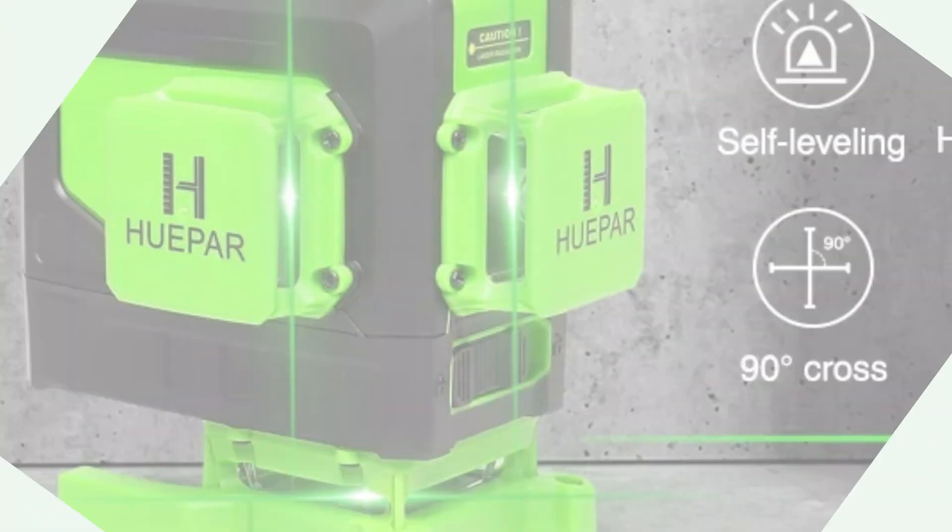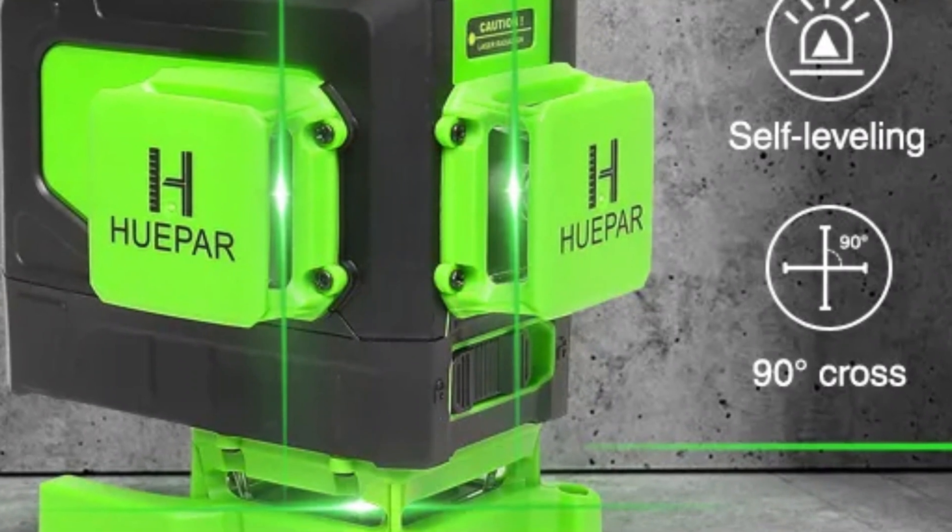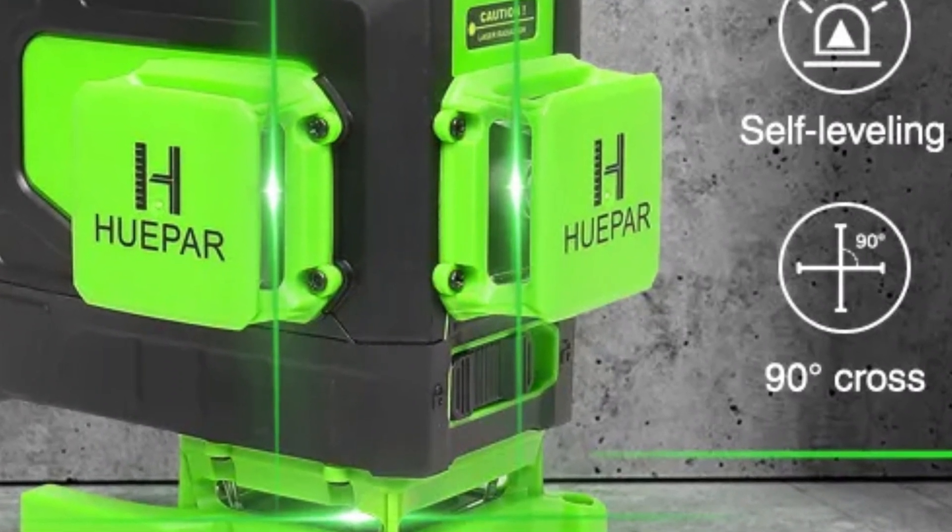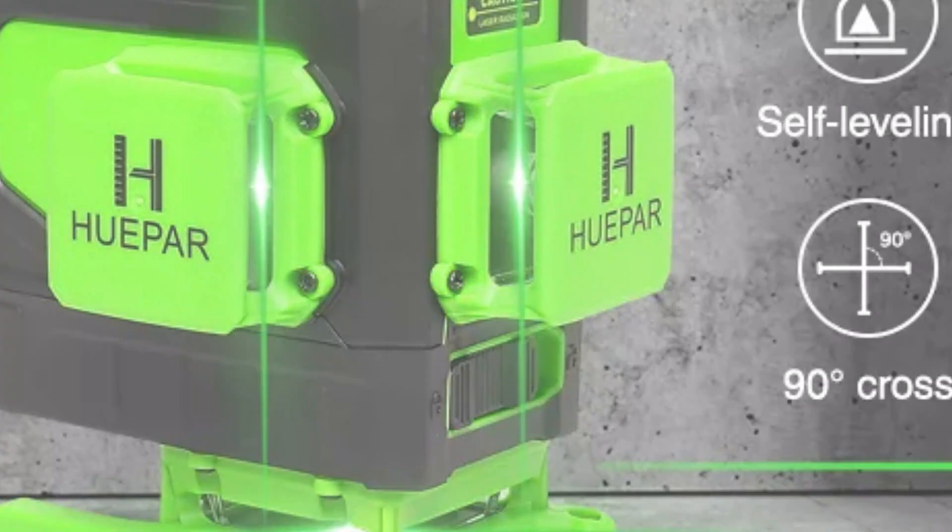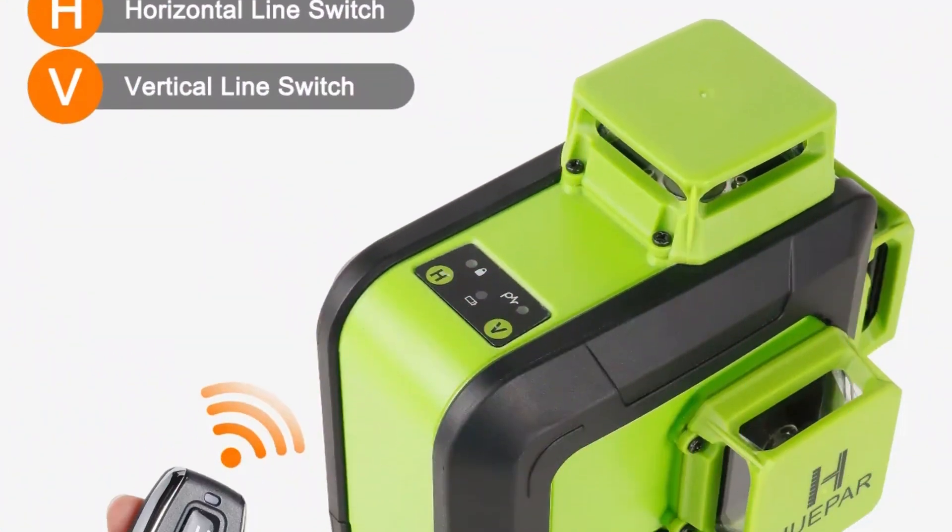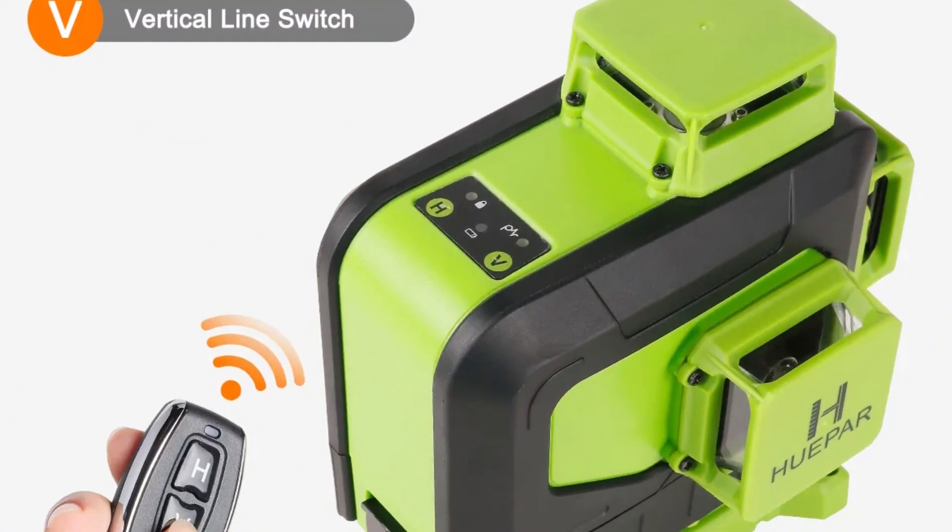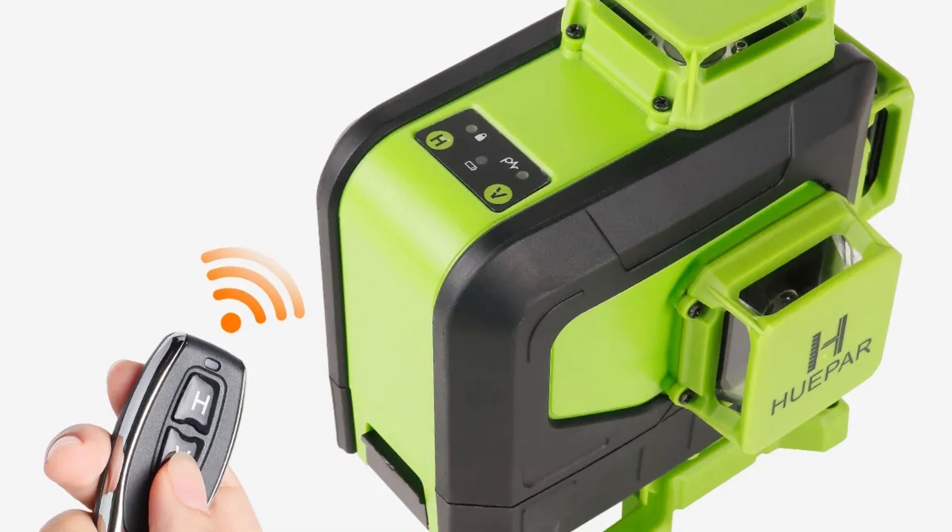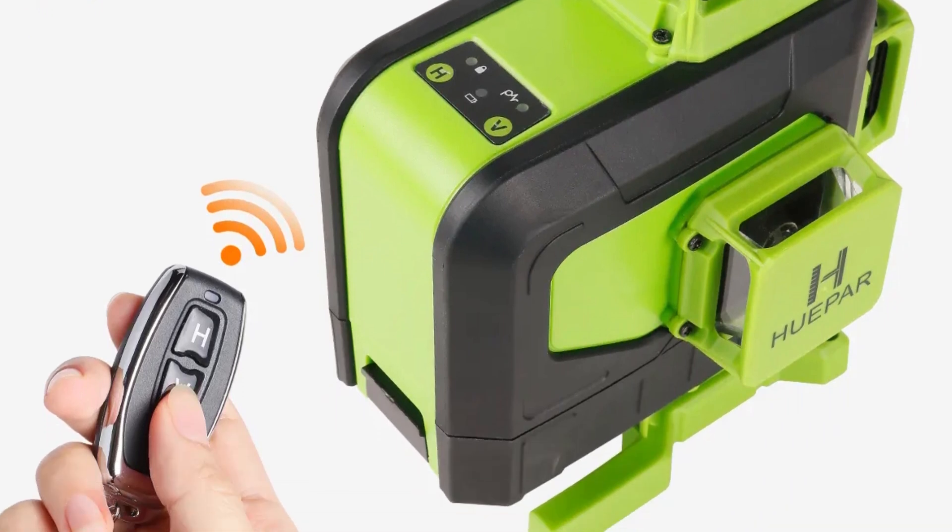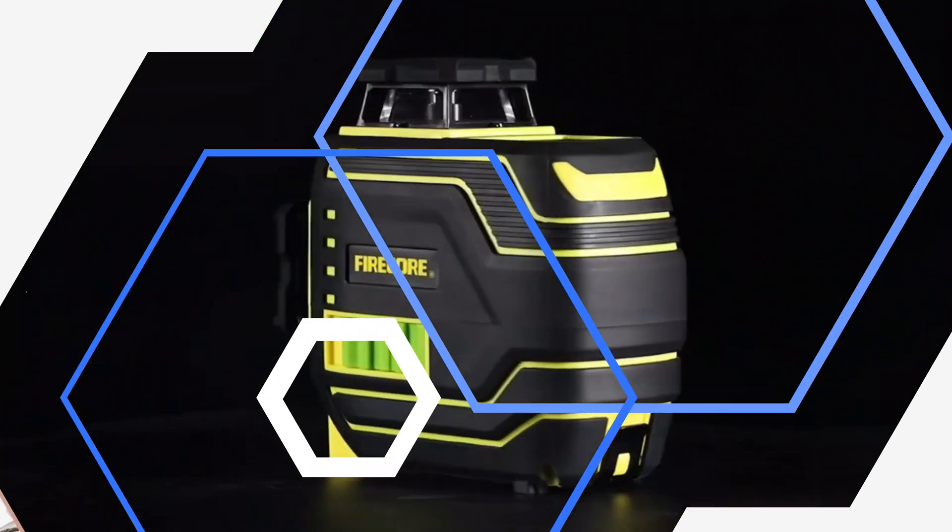It is durable and reliable, with a Li-ion battery providing up to 8 hours of operation. Its plus or minus 4 degrees leveling compensation range ensures accuracy on uneven surfaces. The Hueper 904DG is certified by CE, FCC, and ROHS, ensuring safety and quality in use.